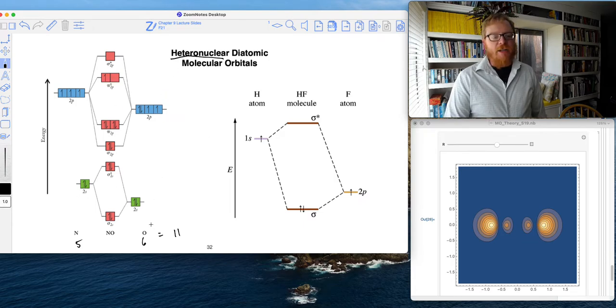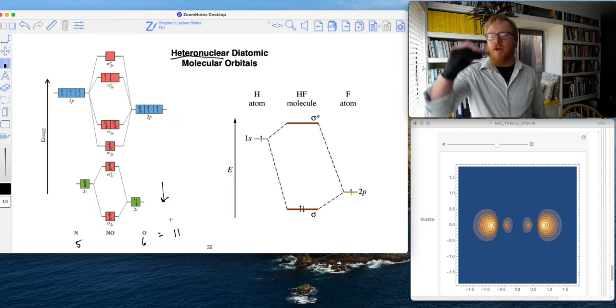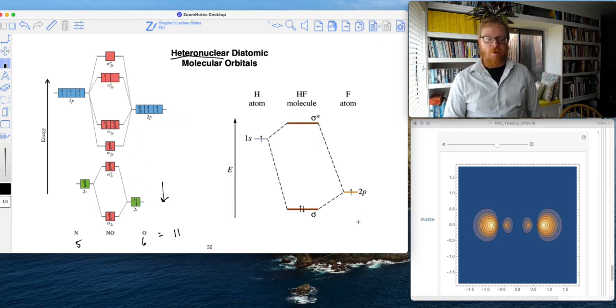So what do we predict from the bonding order from this thing? And also, I should say that when we do these heteronuclear, the electronegative element is always lower, the more electronegative element. So you notice here, this is my 2S for the nitrogen level. But my 2S for the oxygen level is lower.